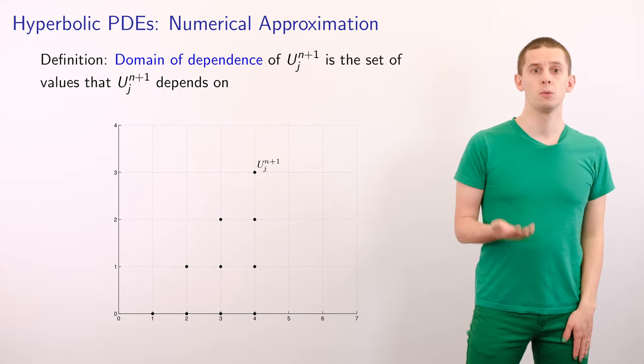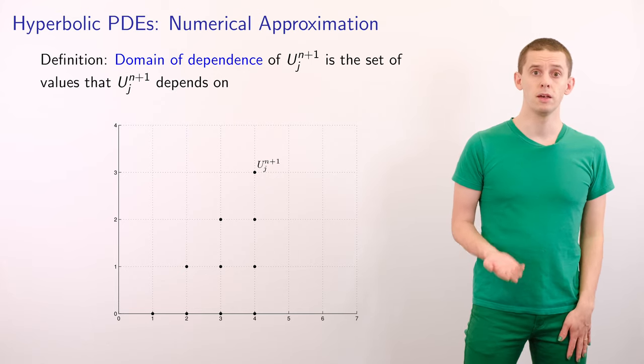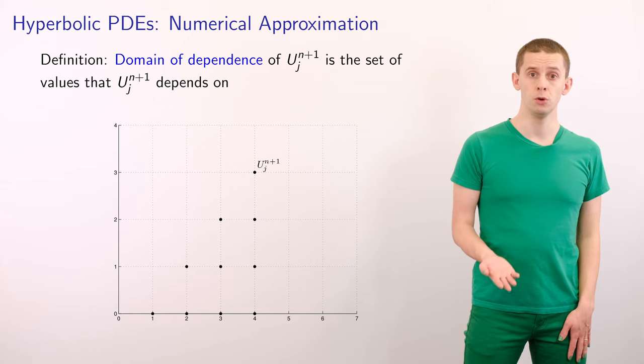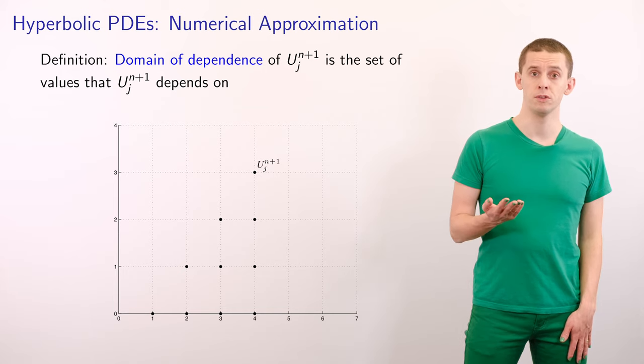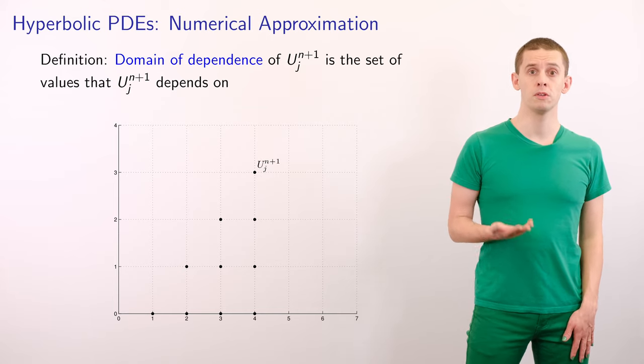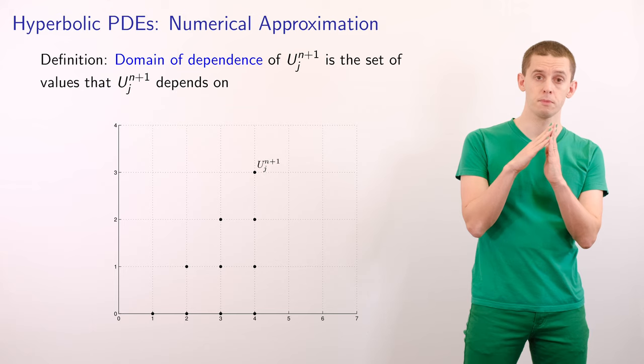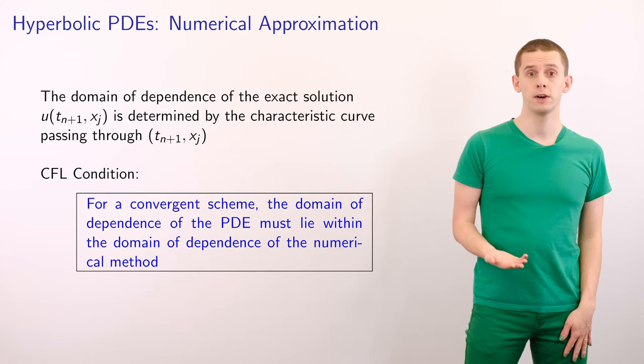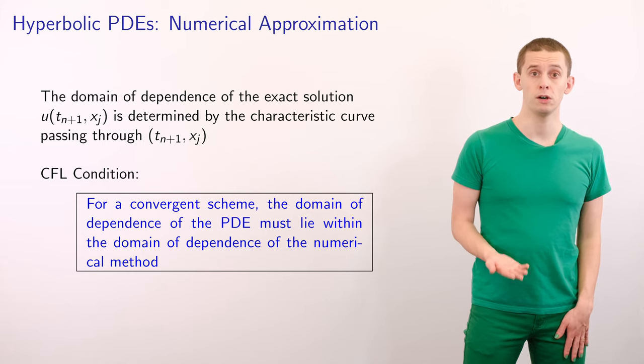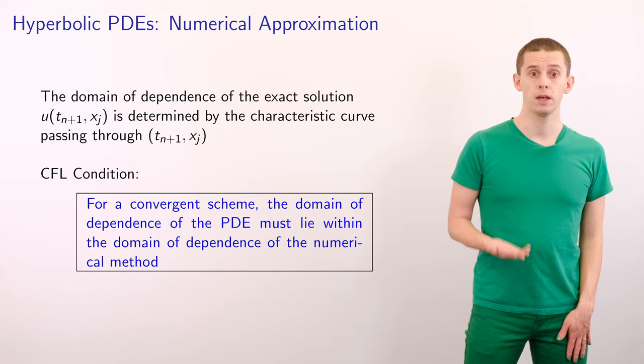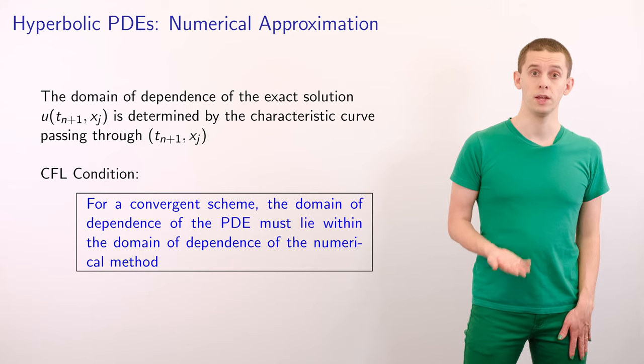Let's now make a definition. We say that the domain of dependence of u n plus 1 j is the set of values that it depends on. And we know that u n plus 1 j depends on u n j and u n j minus 1. And if we follow the dependencies of those terms, and we draw the dependencies in the xt plane, then we'll end up with a triangle of terms. Similarly, we can define the domain of dependence for our exact solution at u of t n plus 1 and x j. And that will be determined by the characteristic curve passing through t n plus 1 and x j.